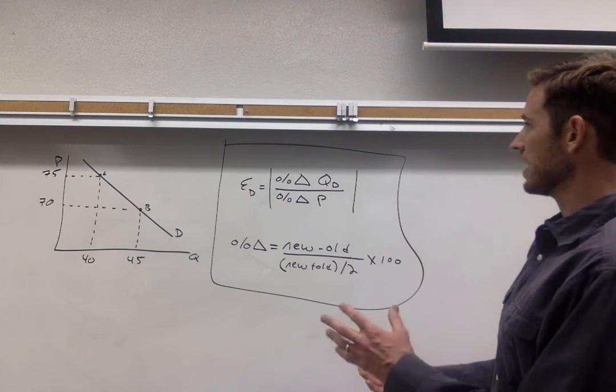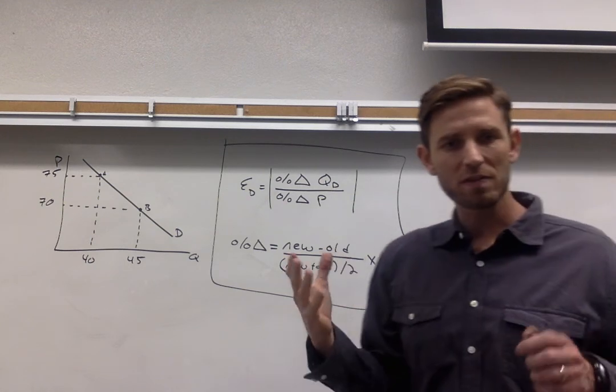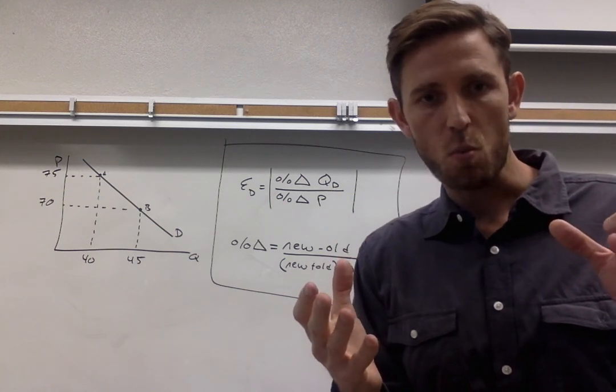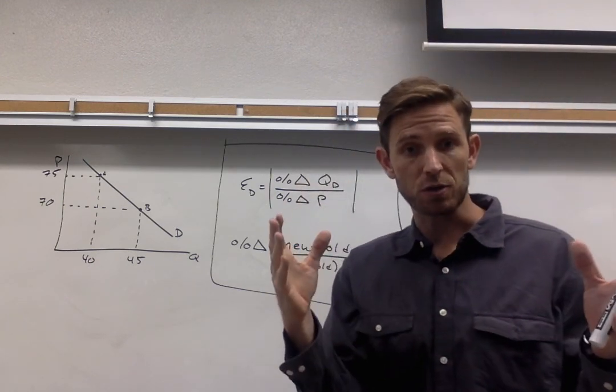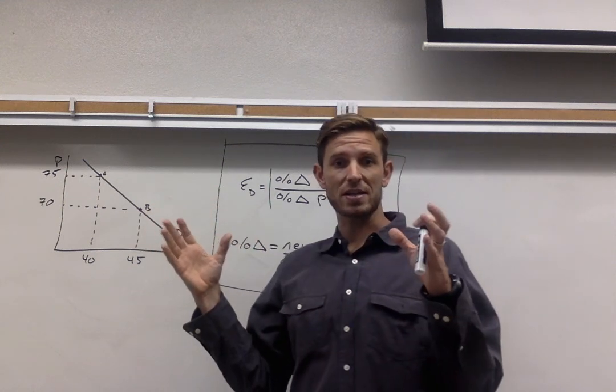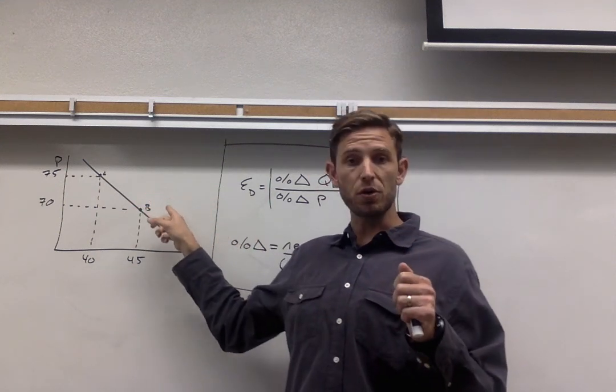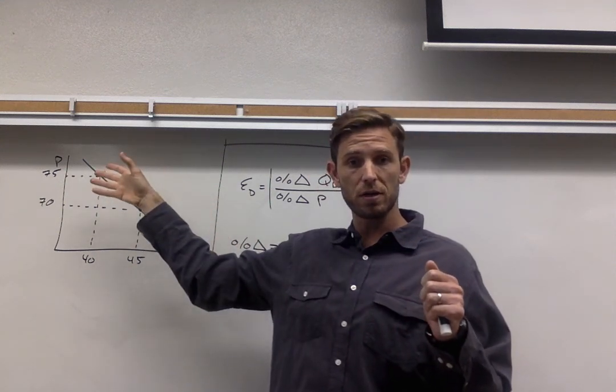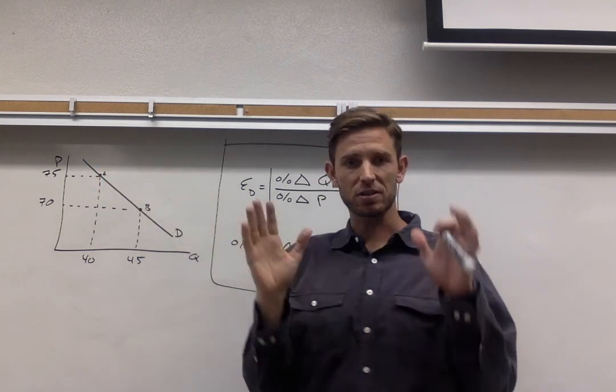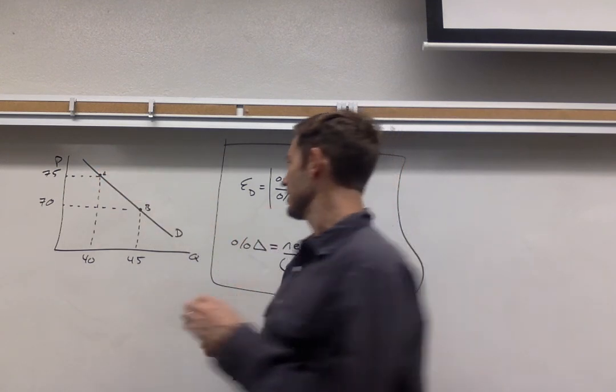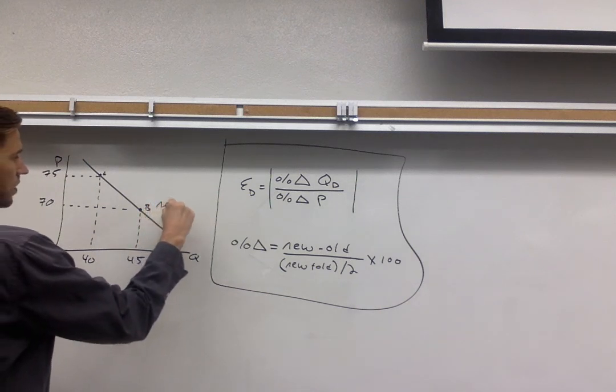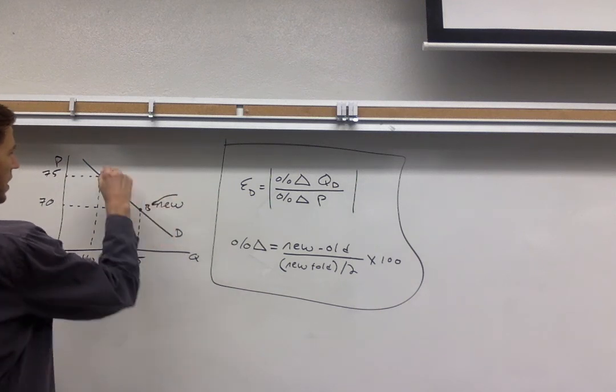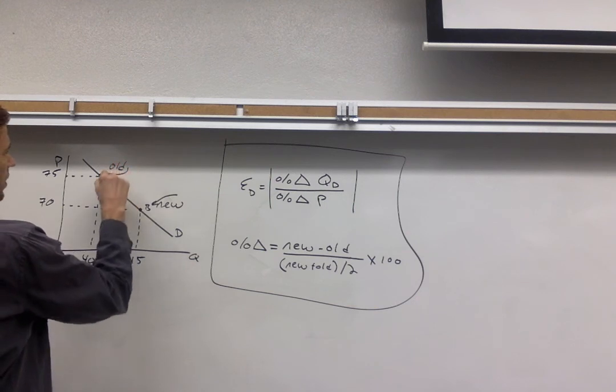We've got two points there A and B. I want to designate one of them as our starting point and then one the quantity that we move to just to keep things straight. And this is an arbitrary choice. So you're going to get the same answer at the end of the day regardless of which one you call new and which one you call old. But nonetheless I like to label it just so that I don't confuse myself.